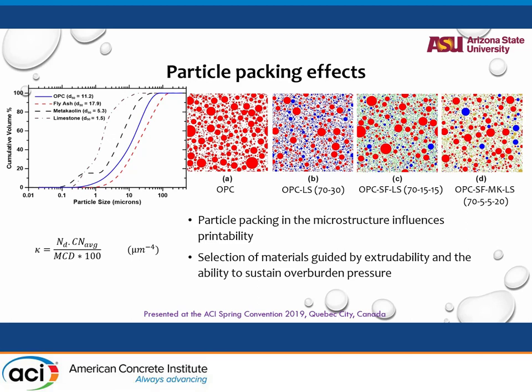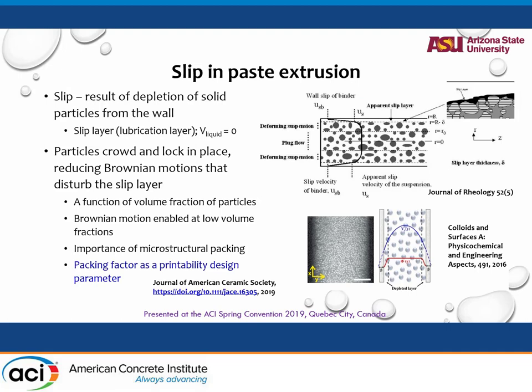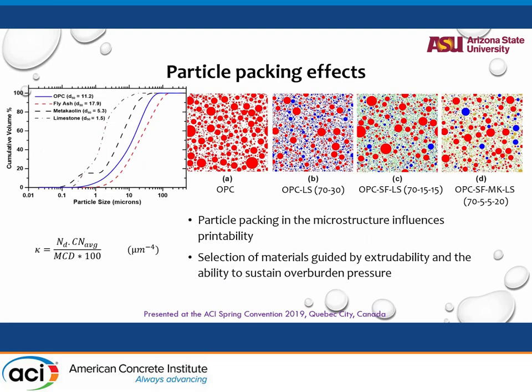We are looking at particle packing effects, trying to understand what really influences rheology in the fresh state. We want a stiff mix, a mix that is printable. There are a lot of trial-and-error mixes that have worked out well, but what we're trying to look at is what kind of distributions of particles will give you good printability. That has influence on extrudability and layer buildup too. Can some kind of printability microstructural factor help you come up with a first design of mixes?